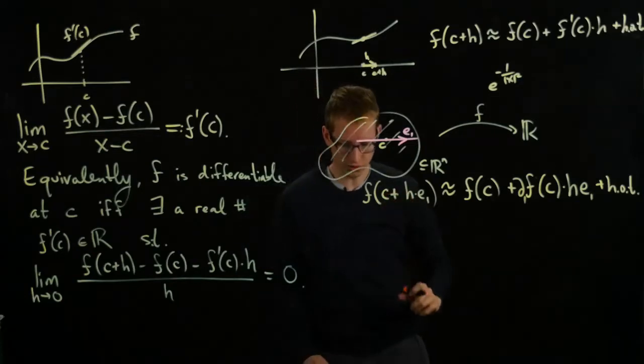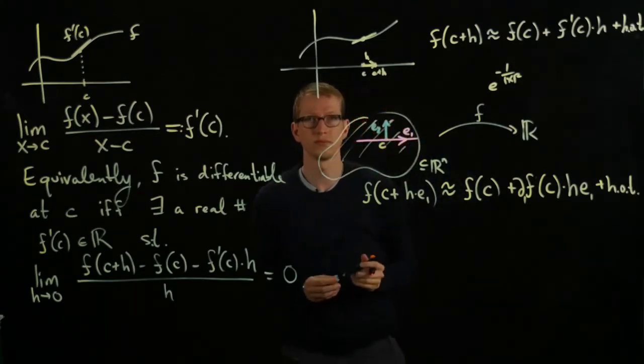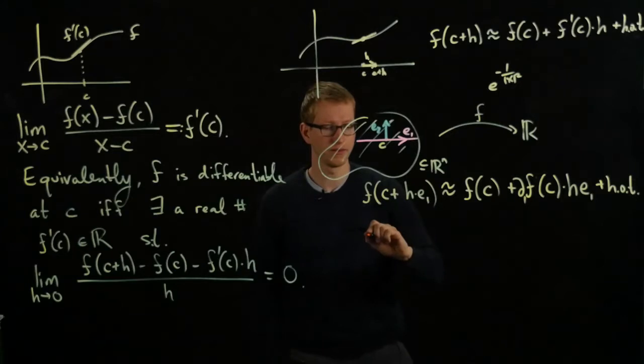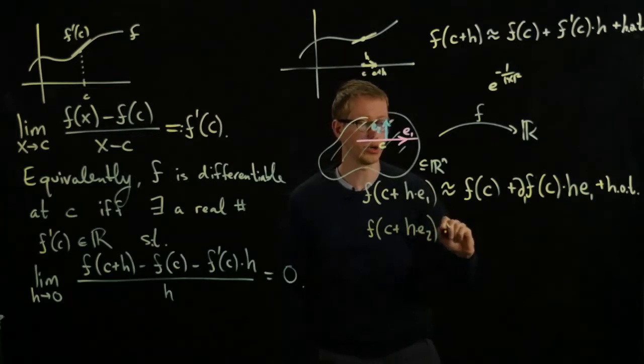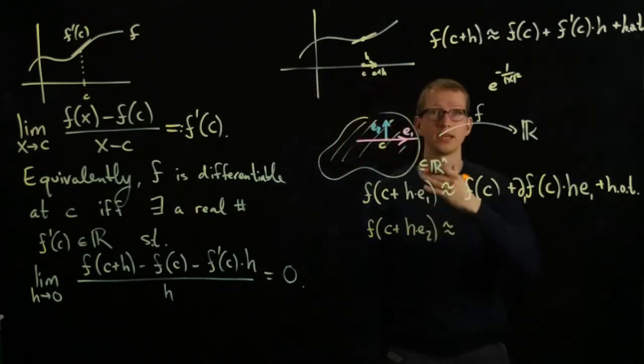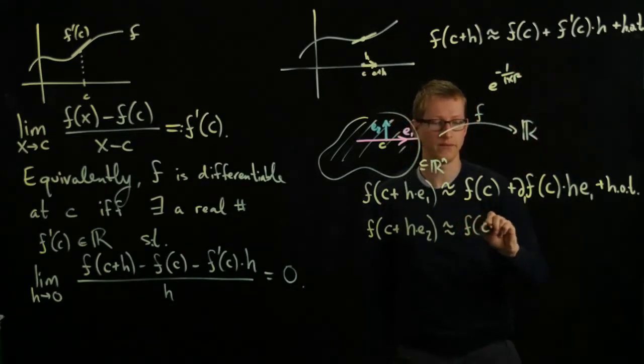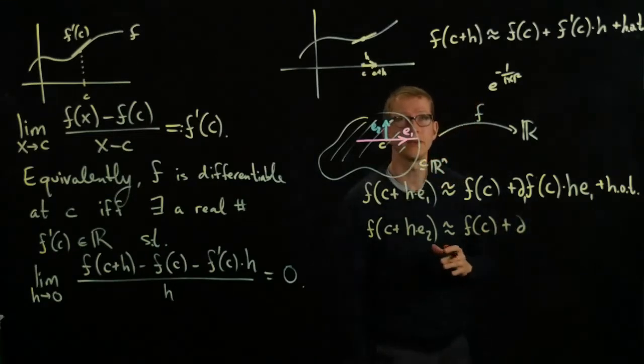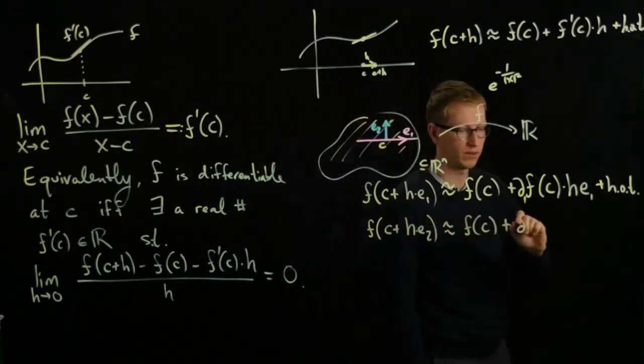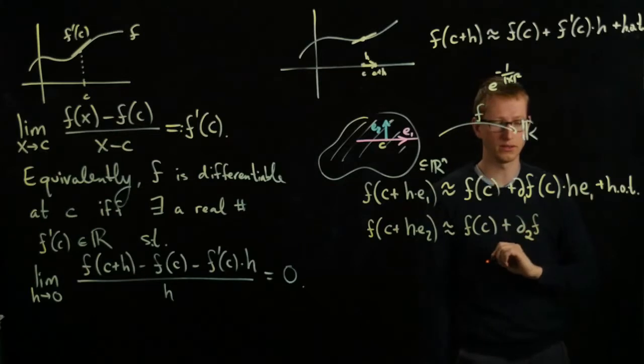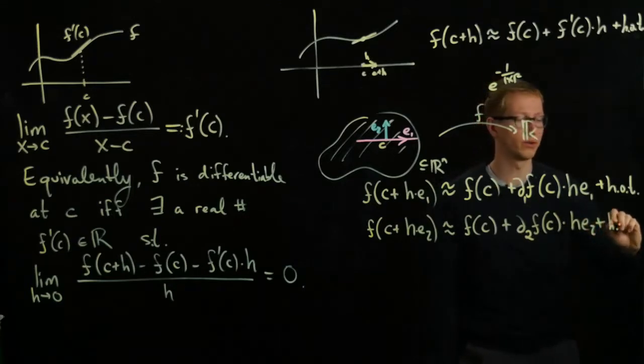Similarly, I can also consider the unit vector in the other direction, E2. And I can also look at the value of the function F at C plus H E2. And I can approximate this as well, assuming again this vague intuitive notion of how we interpret the derivative as F of C plus, and this time we're taking the derivative along the Y axis, and all of the X values are remaining constant. And that defines another function: D2F at C times H E2 plus higher-order terms.